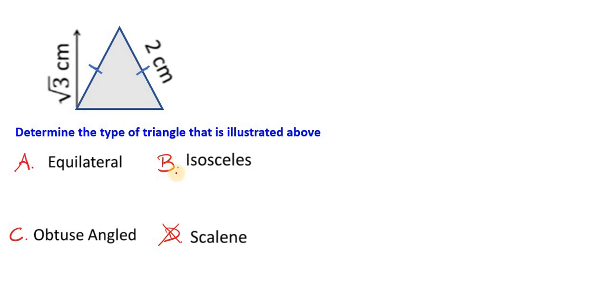Isosceles: only two sides have the same length. Obtuse angled simply means one of the angles is over 90 degrees. Looking at these angles, definitely even if it's not drawn to scale, we can clearly see that these angles are all less than 90 degrees. So we know this option has to be out.